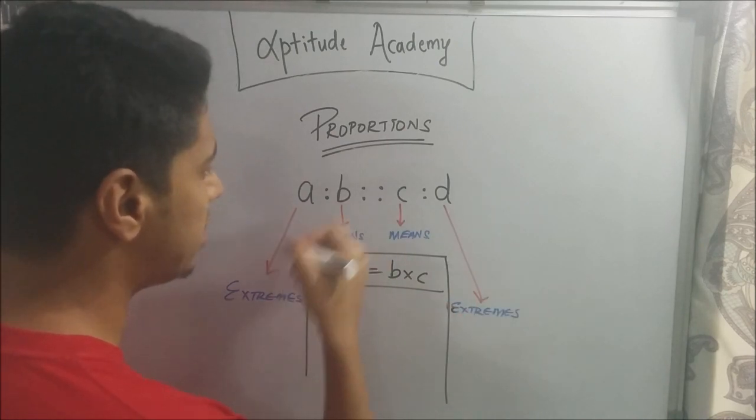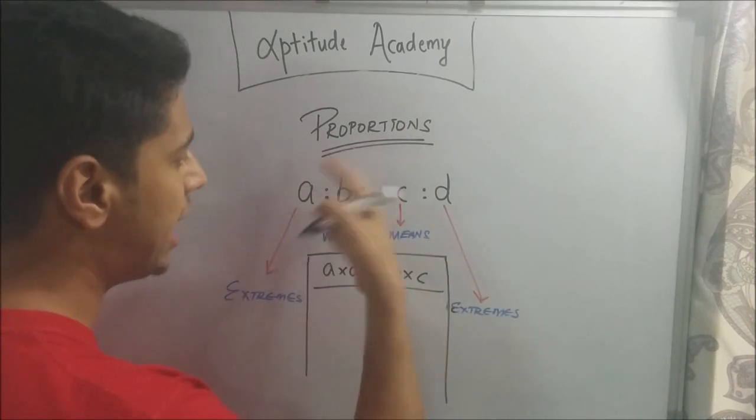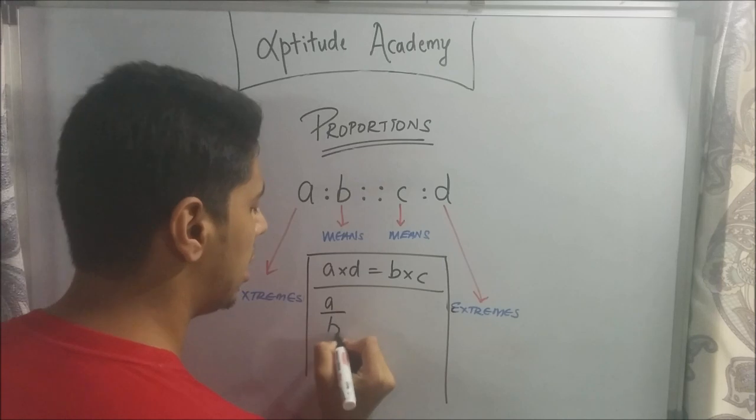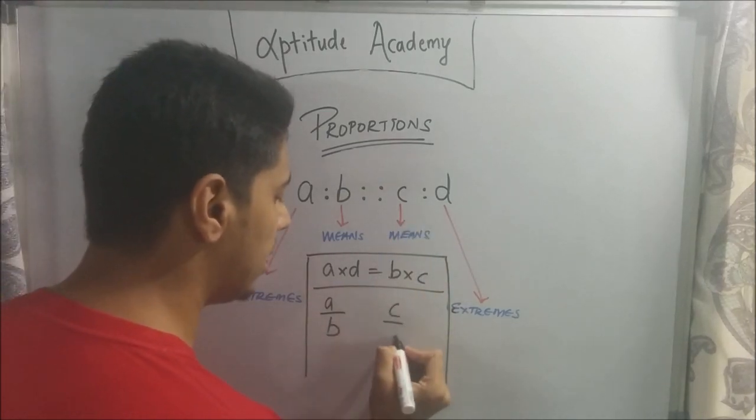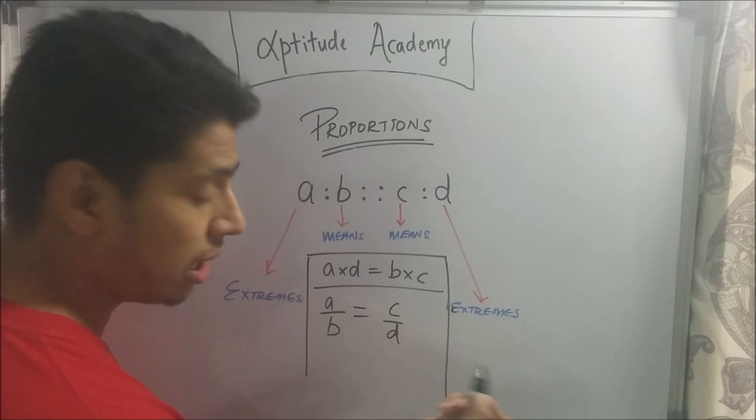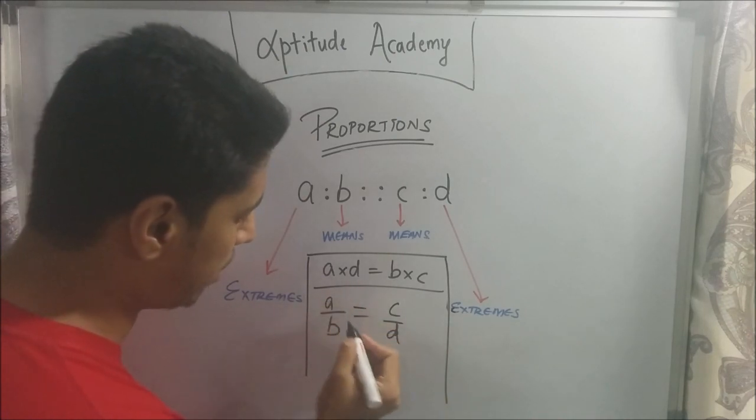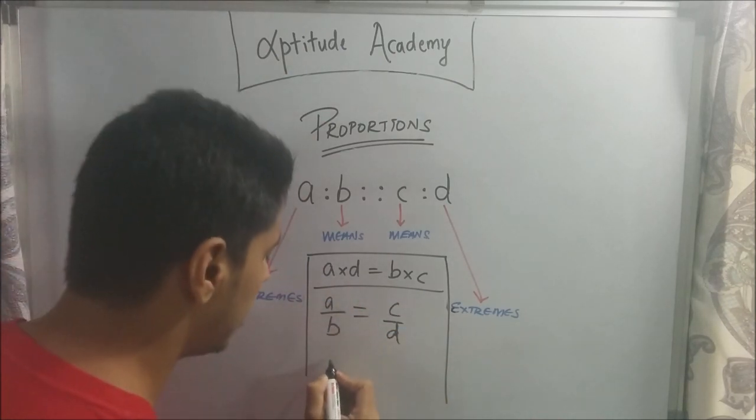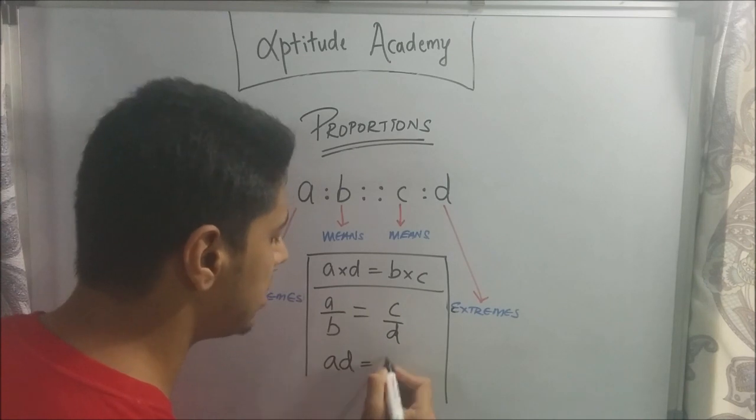Now, how this came about is you just convert this to fractions. A is to B is A by B, and C is to D is C by D. So, proportions basically say that both of these are equal. If both of these are equal, you just cross multiply. So, take D on the side, B on the side. So, you will get AD is equal to BC.